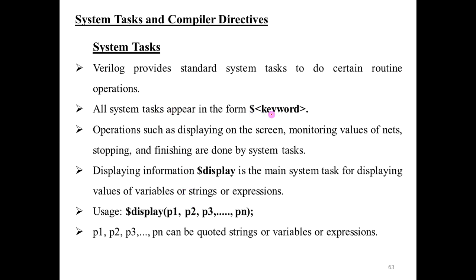Remember that system tasks and compiler directives are also keywords, but they are special. The system task keyword always starts with a dollar symbol, whereas compiler directive keywords always start with a tick — an inverted comma — followed by a keyword. All system tasks appear in the form of dollar symbol followed by a keyword.